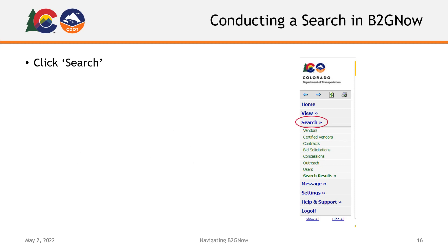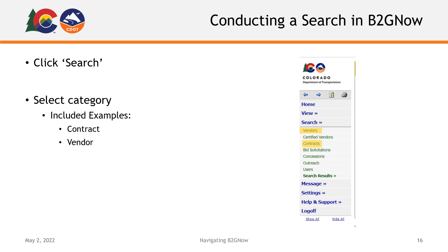Now we will go over how to conduct a search in B2GNOW. To begin, click the Search section on the left side menu and select what category in which you would like to conduct your search. Today, we will demonstrate searching for a contract and searching for a vendor, but the process will remain largely the same no matter what category you search.